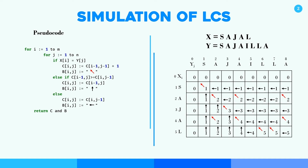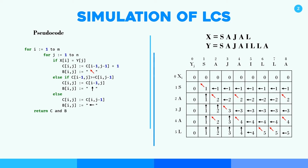Now we have to find the LCS. For finding LCS we have to backtrack from bottom to top — it's a bottom-up process. We start from the bottom of the row and column. Then our arrow indicates left, so we go left. Then diagonal — go diagonal. Then left, left, diagonal, diagonal, diagonal, diagonal. We have determined our path; it ends when we reach 0. In this path, whichever values have a diagonal arrow will be our LCS. Firstly there is 5 with a diagonal arrow which is L, then 4 diagonal which is A, then 3 diagonal which is J, then A, then S. So our LCS will be S, A, J, A, L — which has a length of 5.